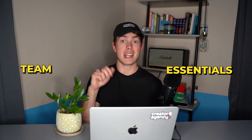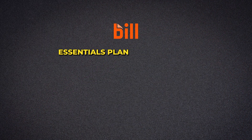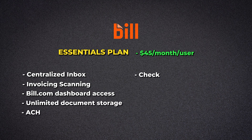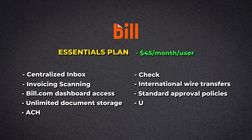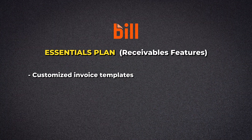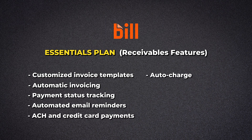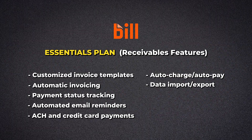Bill.com has tiered paid plans with a free demo option. The base plans are Essentials and Team, with a choice between payables and receivables features. The Essentials plan is $45 per user per month and includes centralized inbox, invoice scanning, Bill.com dashboard access, unlimited document storage, ACH check and international wire transfers, standard approval policies, and up to six user roles. On the receivable side, they offer customized invoice templates, automatic invoicing, payment status tracking, automated email reminders, ACH and credit card payments, auto charge and auto pay, as well as data import and export.